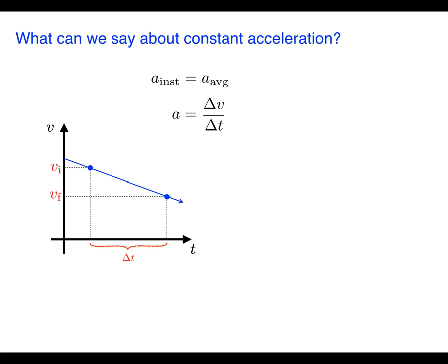And then remember that Δv is v_f minus v_i so we can make that substitution as well. The next step is to solve for v_f and when we do that we get this equation: v_f equals v_i plus a Δt. This is the first of the constant acceleration equations.